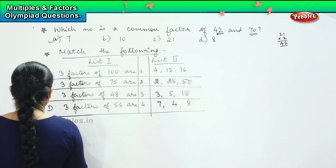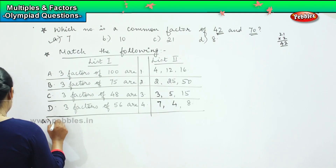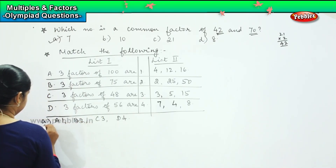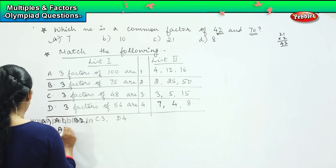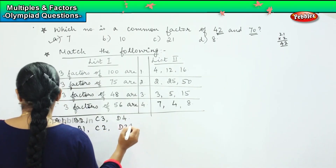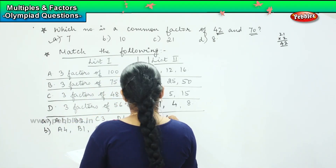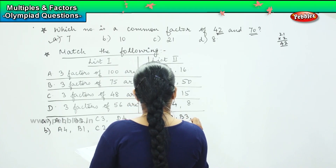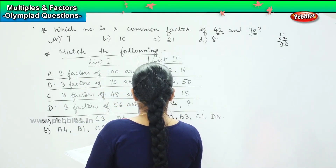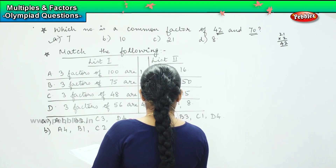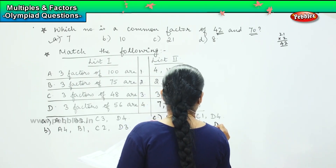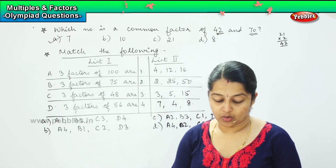Now let's see the answer options. Option A: A1, B2, C3, D4. Option B: A4, B1, C2, D3. Option C: A2, B3, C1, D4. And option D: A4, B2, C3, D1. Now let's look at our question.